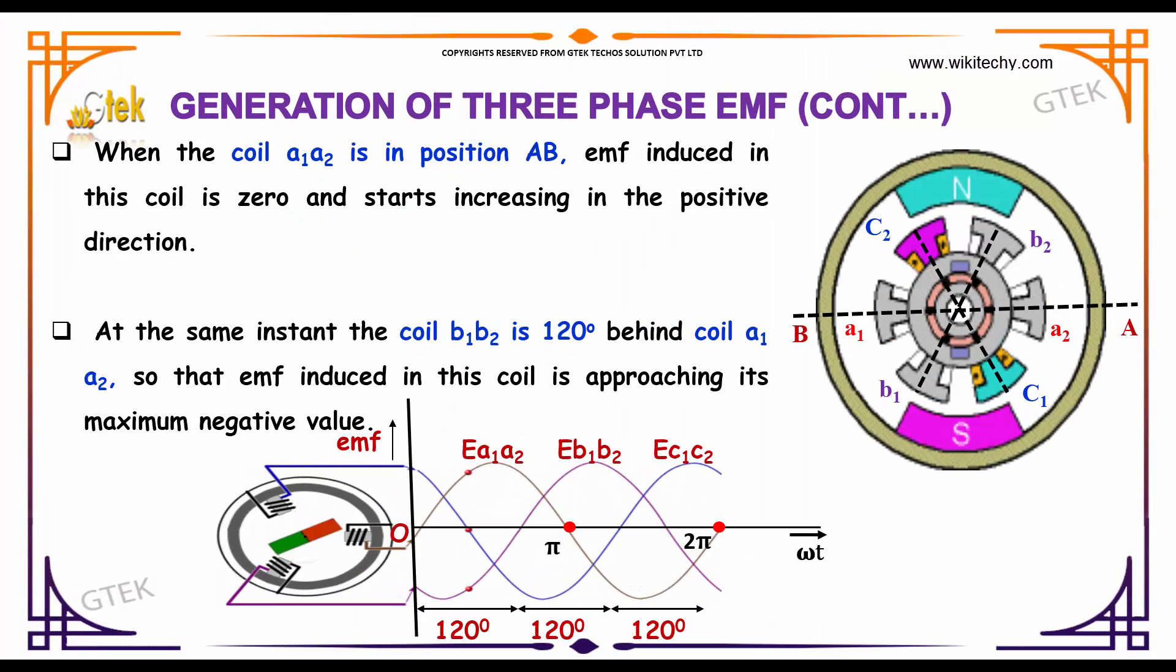When the coil A1A2 is in position AB, EMF induced in this coil is zero and starts increasing in the positive direction. At the same instant, the coil B1B2 is 120 degrees behind coil A1A2, so the EMF induced in the coil is approaching its maximum negative value.